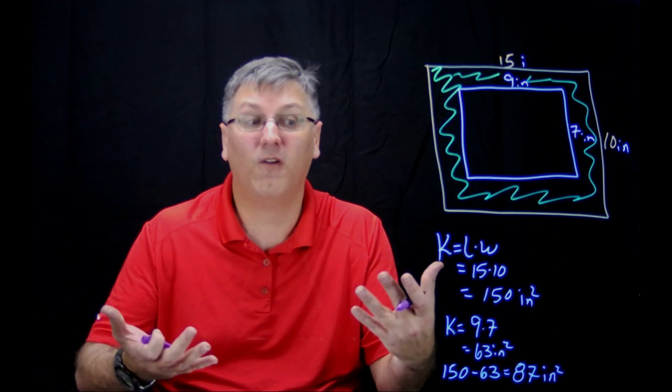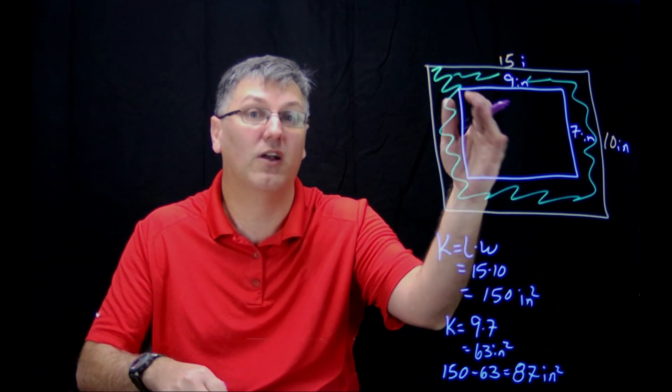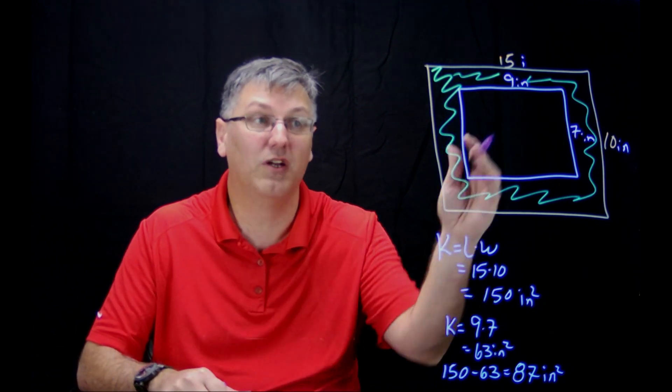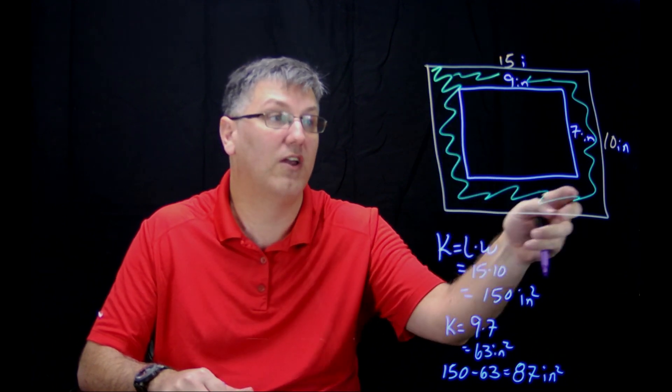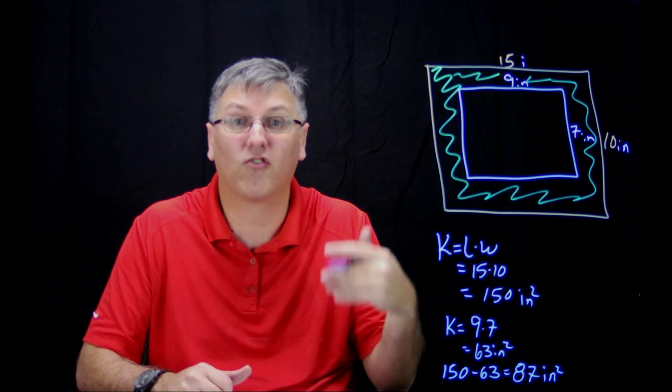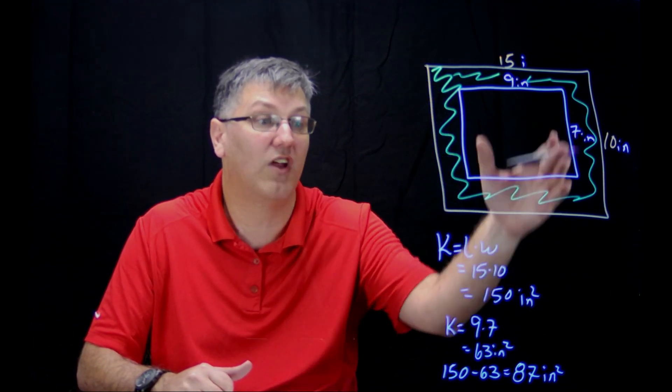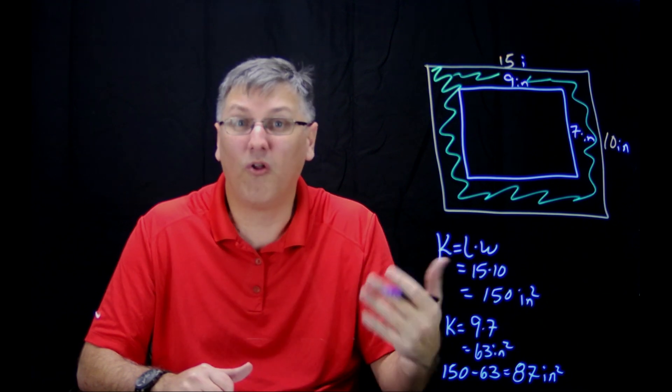So I have 150 inches for the whole thing. I don't want to be in the middle here. I don't want to be in this 63 square inch area. I want to be out here in this 87 inch squared area. So what's the probability of me just throwing a random dart at it without aiming and actually landing in my shaded area? All I do is divide the areas.